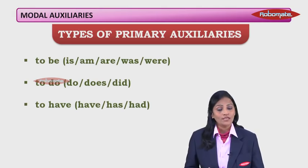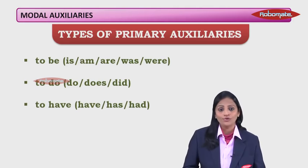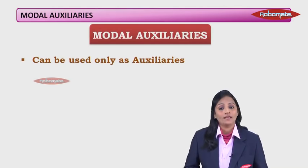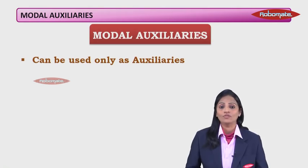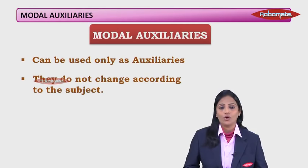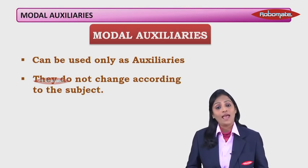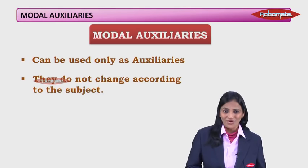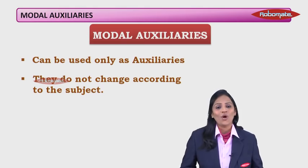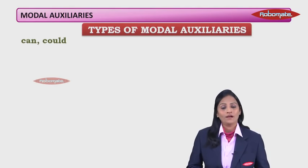So those were primary auxiliaries — to be, to do, to have — and their uses. Now we go on to the actual topic: modal auxiliaries. Modal auxiliaries can only be used as auxiliaries; they cannot be used as the main verb. They do not change according to the subject. 'Salman can paint very well' — but 'Salman and Sachin can paint' — the 'can' does not change.